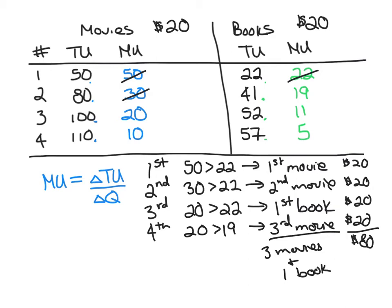She ends up with three movies and one book. Another way we could have figured this out is by calculating the marginal cost of each item, using the rule of thumb that we should only make purchases up to the point where marginal benefit or marginal utility equals marginal cost, and we should stop buying — say, stop buying movies — if the marginal cost is going to exceed the marginal utility.